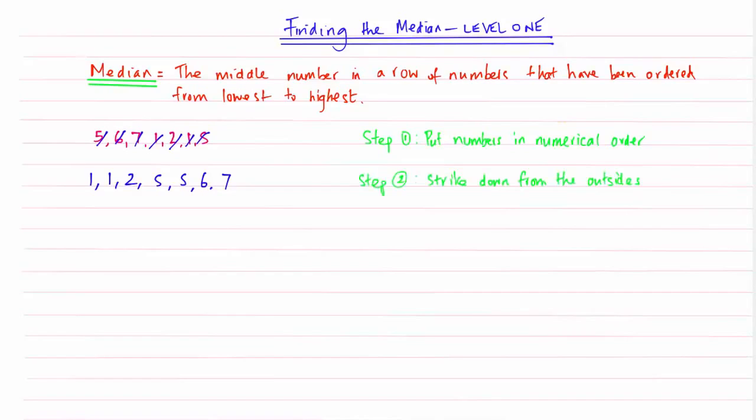And this is where step 2 comes in. So this is a quick method to find the middle number. We are going to strike down from the outsides. So I am going to start on that side, strike it through, go to my other side and strike that through. And I am going to be dead systematic, striking down my numbers.